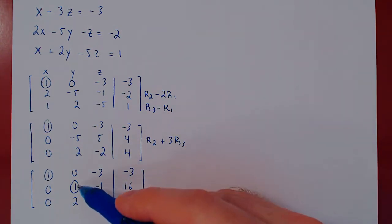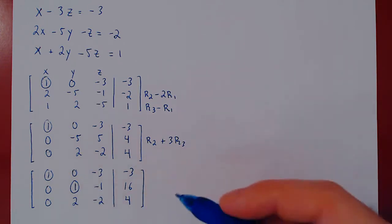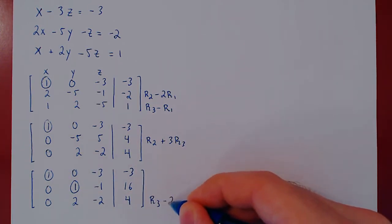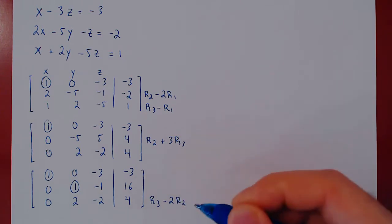Now that we have our second leading one, we want to kill the entries below it. And so quite simply, we do row 3 minus 2 row 2.